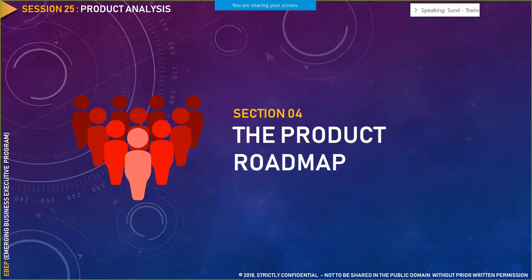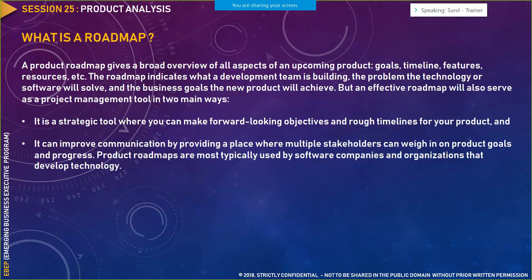Once all these things are done, we create our product roadmap. A product roadmap gives a broad overview of all aspects of an upcoming product — the goals, timelines, features, and needed resources. The roadmap indicates what the development team is building, the problem the technology or software will solve, and the business goal the new product will achieve.